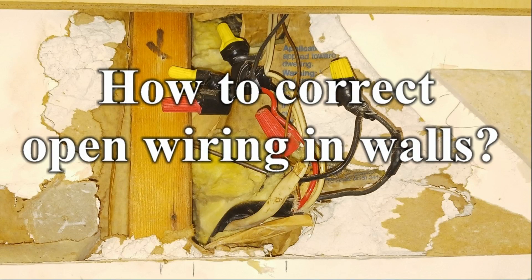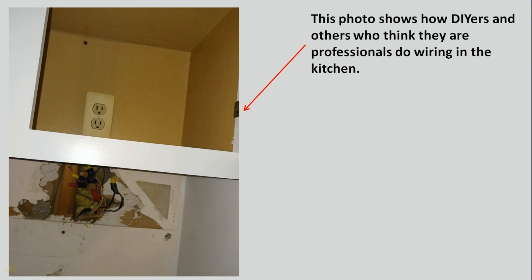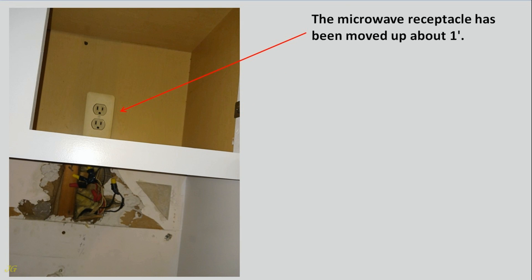How to Correct Open Wiring in Walls. This photo shows how DIYers and others who think they are professionals do wiring in the kitchen. The microwave receptacle has been moved up about one foot.